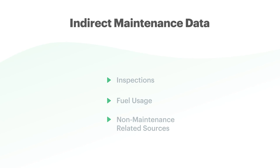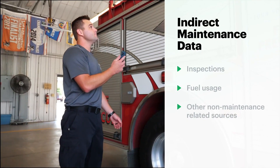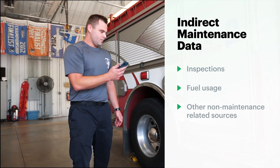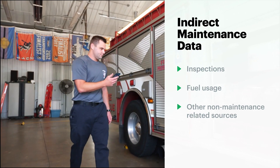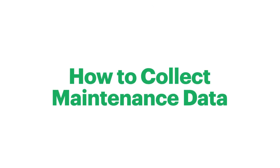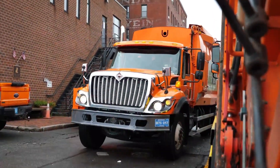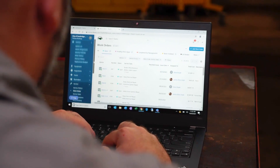Most fleets focus on direct maintenance data, but indirect data can give a wider range of insights that maintenance documentation alone can't give you. Chances are that you're already collecting maintenance data just by running your fleet every day through things like inspections and work orders.